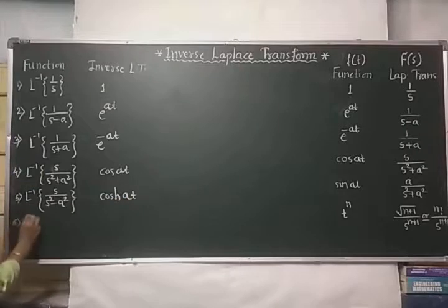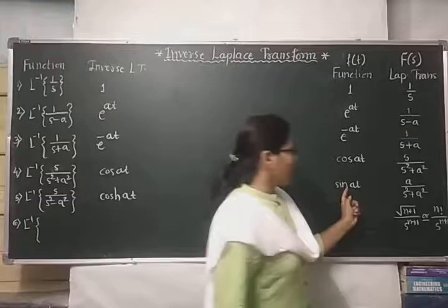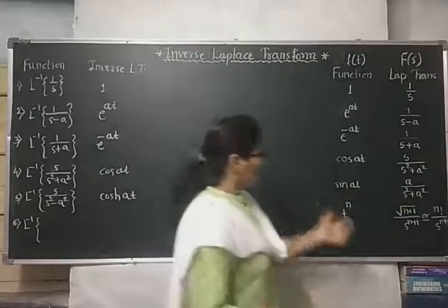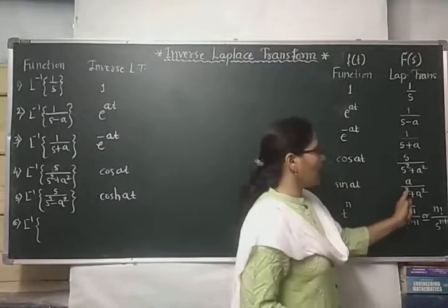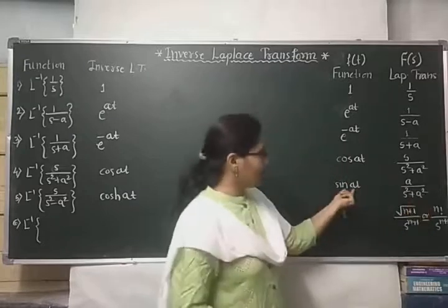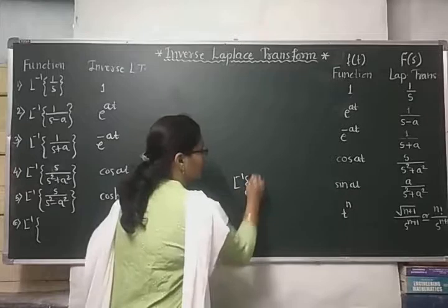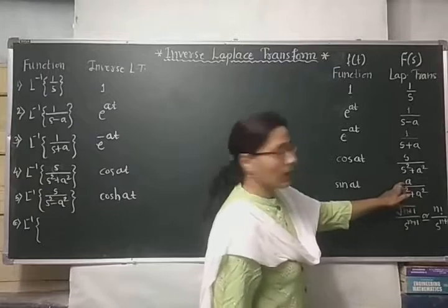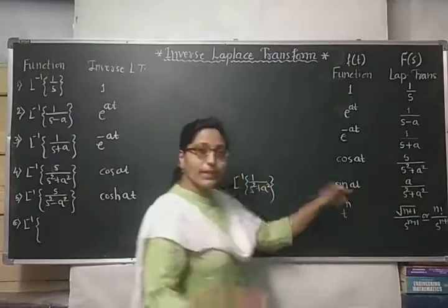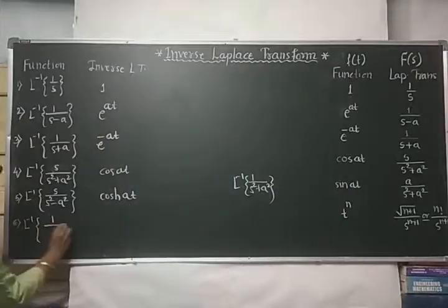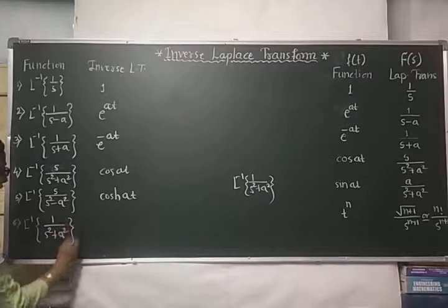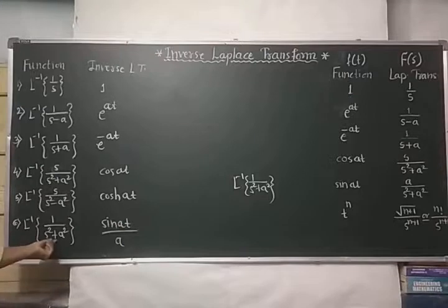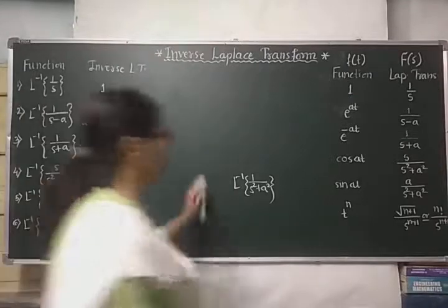The Laplace transform of sin(at) is a/(s²+a²). So if we take the Laplace inverse of a/(s²+a²) we get sin(at). But for the Laplace inverse of 1/(s²+a²), the numerator 'a' is missing, so it gets divided, giving sin(at)/a. Similarly, we can construct the formula for 1/(s²−a²).